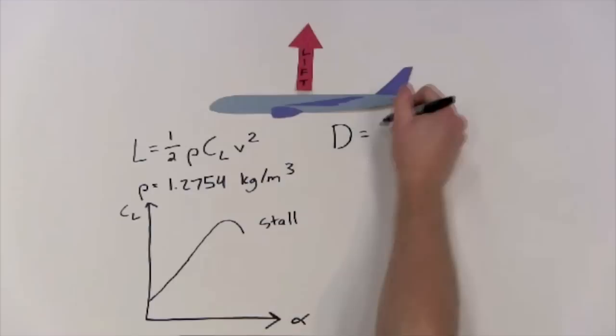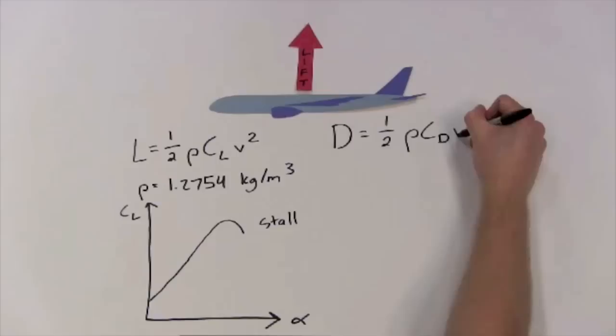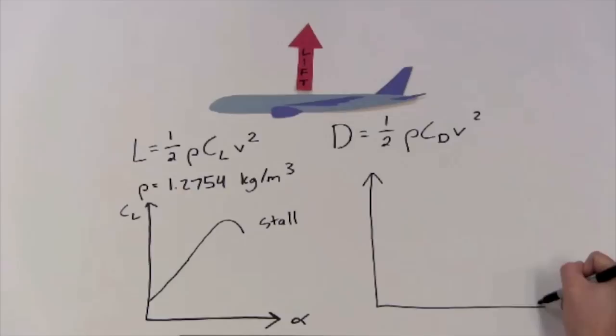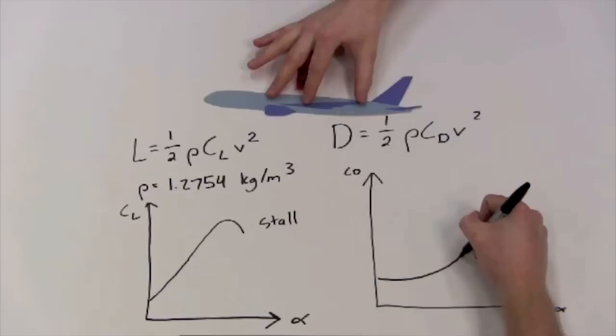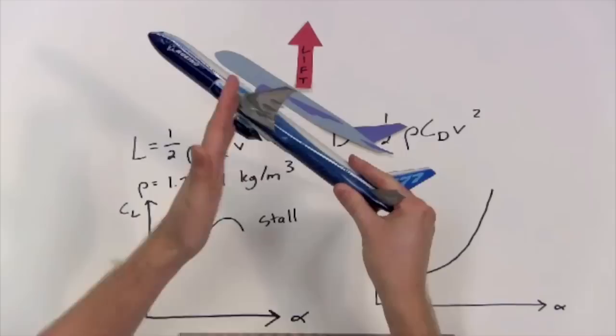There's a similar equation for the drag per unit wing area D. D equals one-half rho - not CL, that really wouldn't make any sense - CD. As you can guess, it's the coefficient of drag times the velocity squared. The coefficient of drag is another number that tells us something about the wings, and it also varies with the angle of attack. So as the angle of attack increases, the coefficient of drag increases as well. This is because as the aircraft is pitching up, there is more wing area perpendicular to the flow.